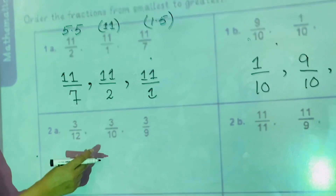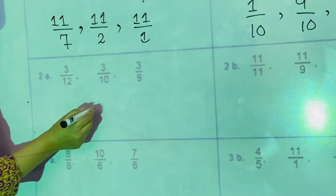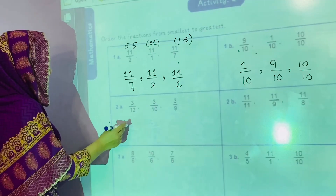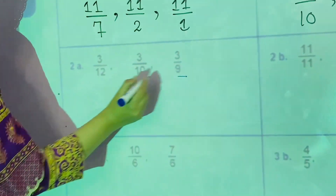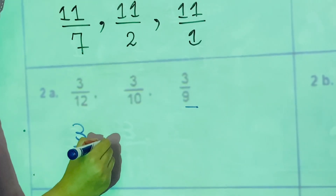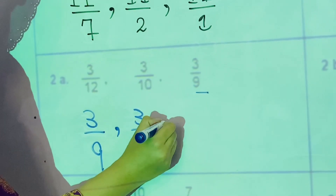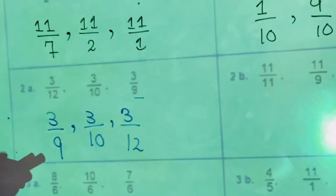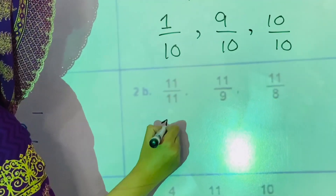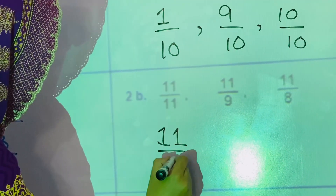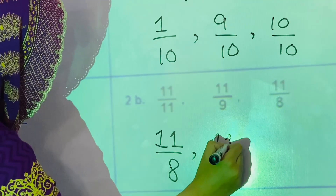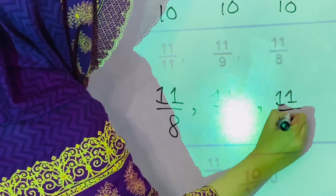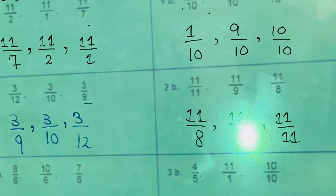In the second question, part A, the smallest one is 3 by 9, then 3 by 10, and then 3 by 12. In part B, the least number is 1 by 11. In this way you will complete this activity.